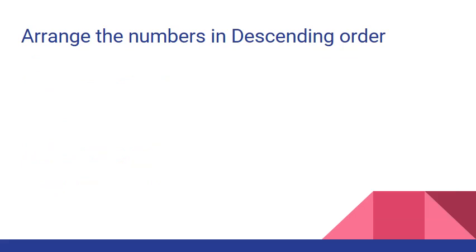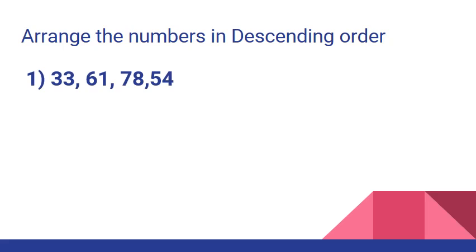Now let us arrange the numbers in descending order. Descending order means to arrange the numbers from the greatest to the smallest. We will arrange the given numbers from the greatest to the smallest. Number 1: we have 33, 61, 78 and 54. Which one is the greatest number here? Yes, 78 is the greatest number.